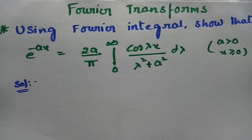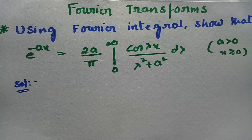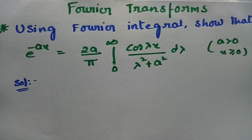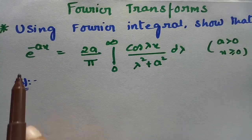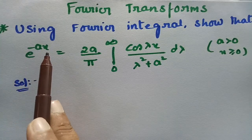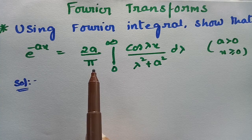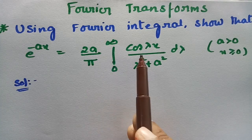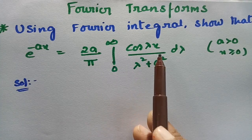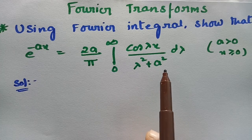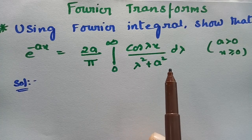This video is going to help you become confident in solving problems related to Fourier transformation. Using the Fourier integral, we have to show that e^(-ax) is equal to (2a/π) times the integral from 0 to infinity of cos(λx) divided by (λ² + a²) dλ.